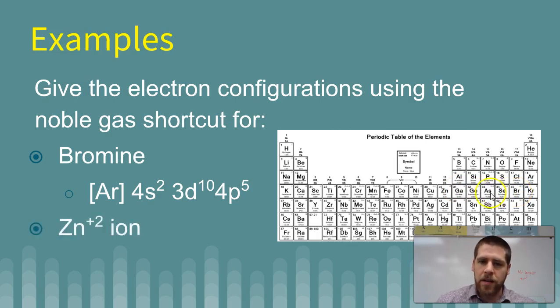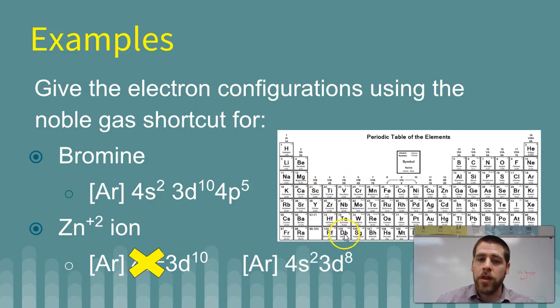What about the zinc ion? Maybe start with the zinc atom, and then maybe remove two electrons from it. Go ahead and pause the video and do that one. No, really. Go ahead and pause the video. All right, so you would have this, previous noble gas, and 4s2, and then 3d10 to get to zinc. But that's not the ion. That's the atom. You've got to remove two electrons.